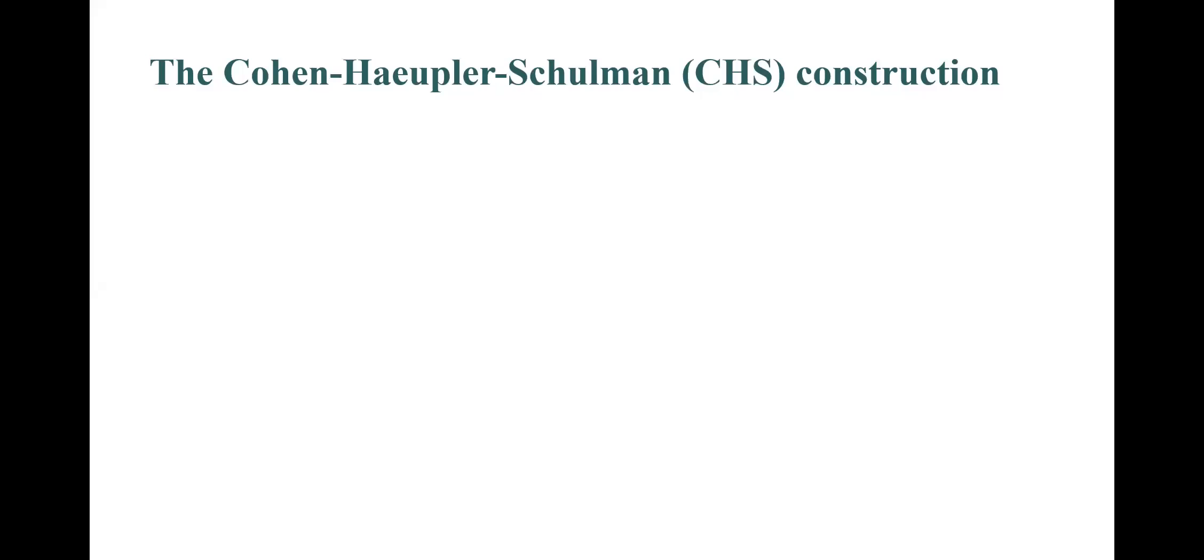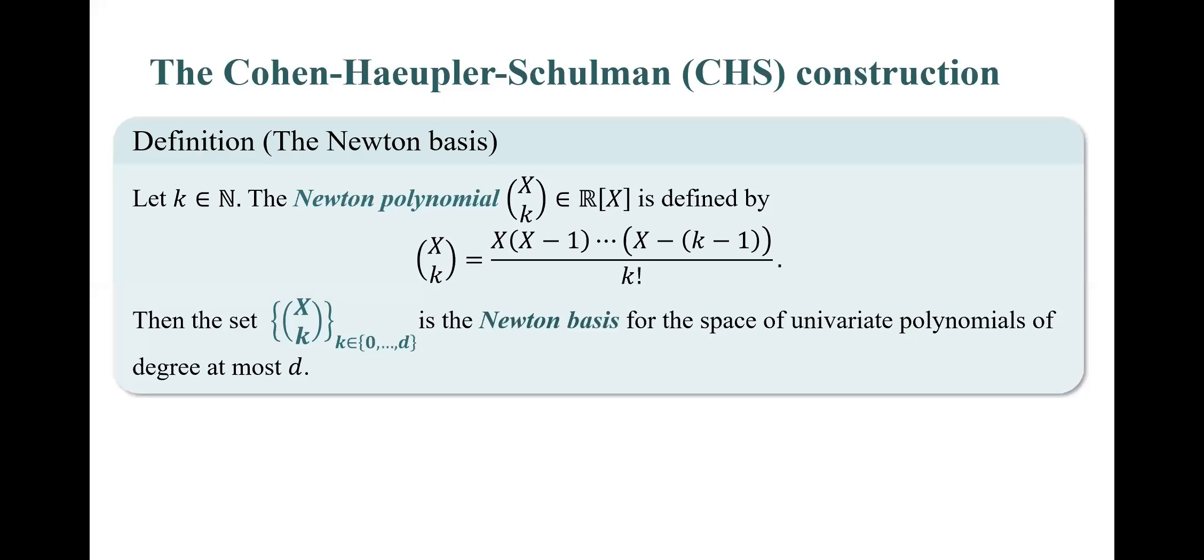CHS makes use of the Newton basis. This is the basis for the space of univariate polynomials with real coefficients. The Newton basis consists of polynomials of the form x choose k for any positive integer k. Note that for any positive integer d, the set that highlighted in green forms a basis for the vector space of univariate real polynomials of degree at most d.